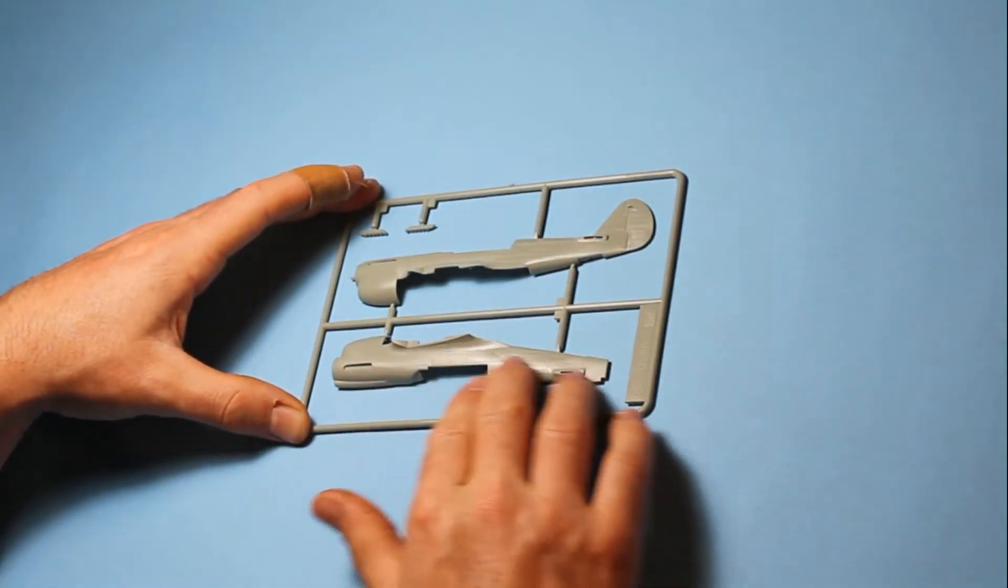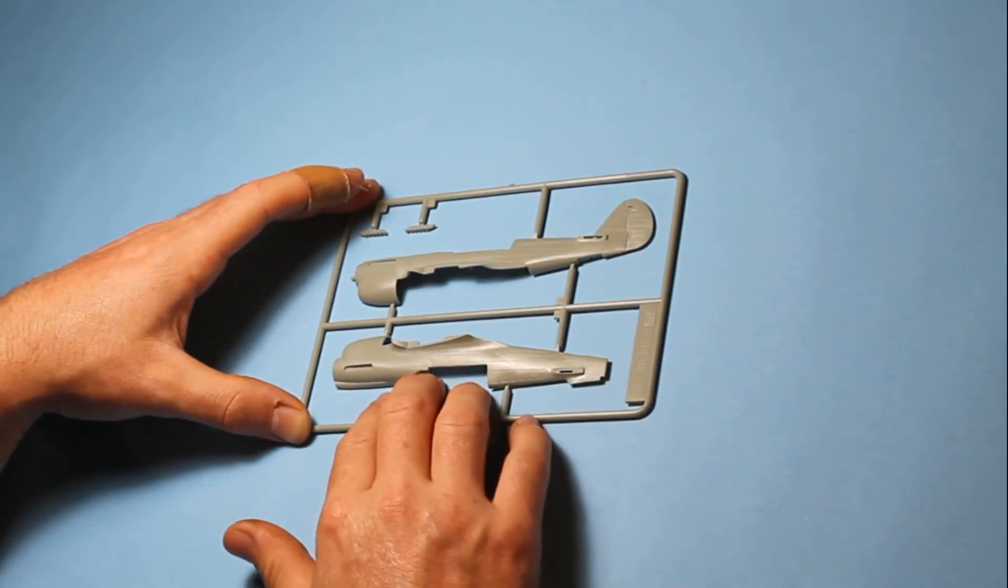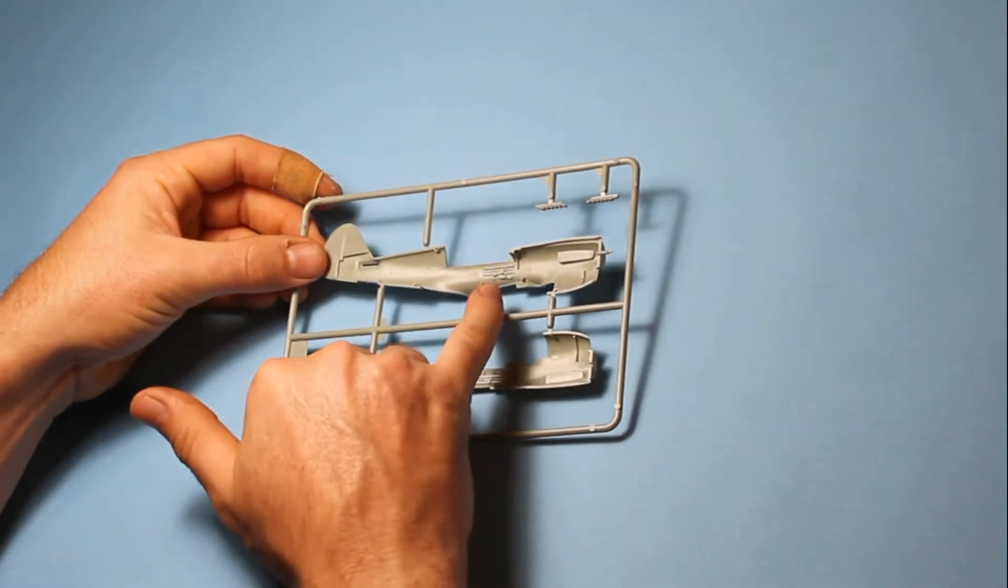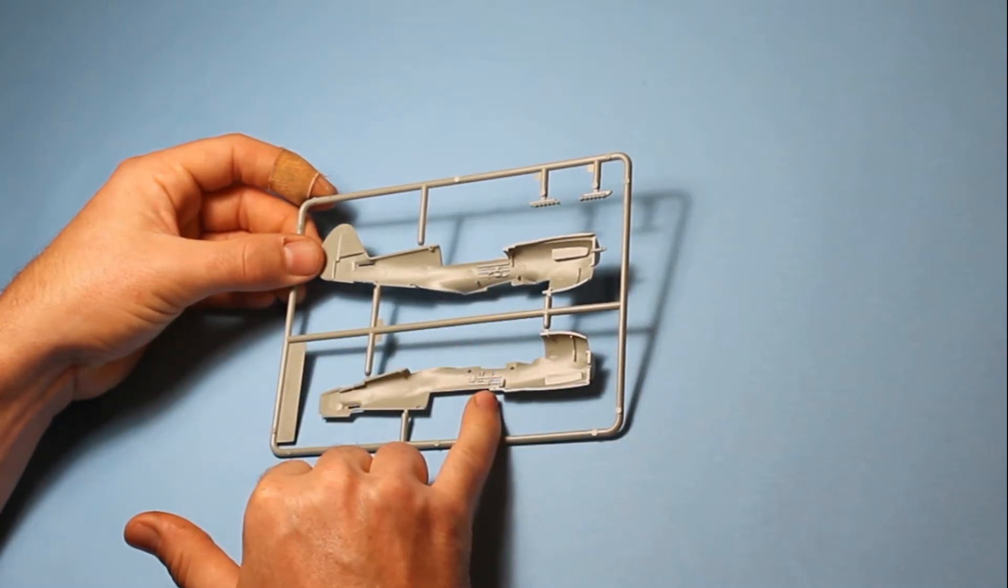So starting with the fuselage halves, we've got very nice recessed panel lines and rivet detail right the way across, as well as internal detail for the cockpit here. It all looks very good, no problem.